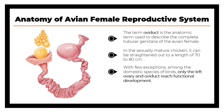With few exceptions among the domestic species of birds, only the left ovary and oviduct undergo functional development. This is because the right ovary and oviduct are present during the early embryonic development in birds, but the symmetrical migration of precursor germ cells to the left ovary ultimately results in the regression of the right ovary in most species.